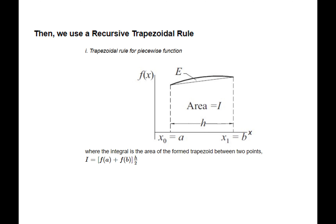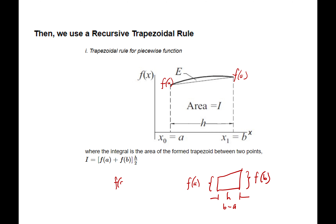You have the height F of A, the height F of B, and the distance H, which is B minus A. The formula is: F of A plus F of B, divided by 2, times the height H. That's the original formula for the trapezoid area.